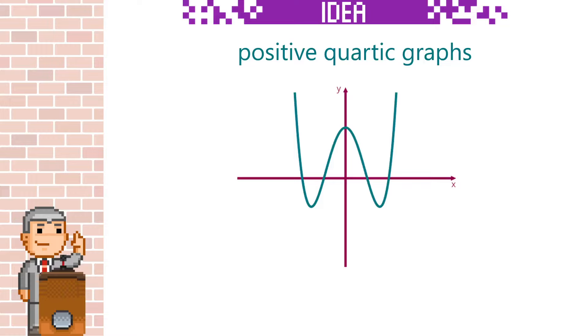Positive quartic graphs start from positive infinity on the left and return to positive infinity on the right. They can have 0, 1, 2, 3 or 4 roots. Negative quartic graphs start from negative infinity on the left and return to negative infinity on the right.